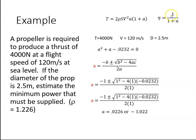The efficiency is equal to 1 over 1 plus a. We're always going to use the positive value. So we're going to use a as 0.0226, and that gives me an efficiency of 97%, which is pretty good.